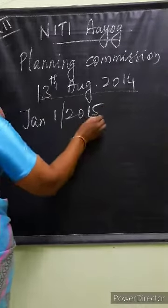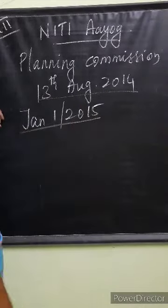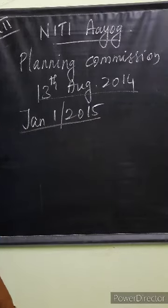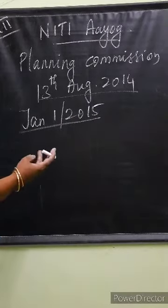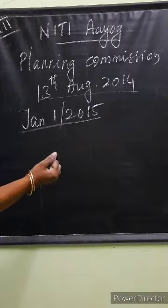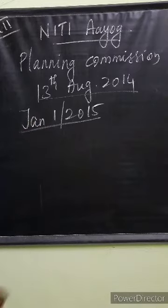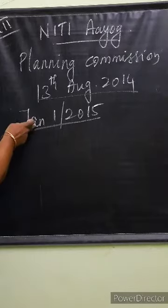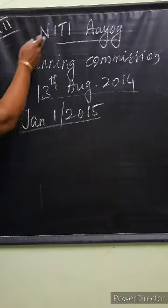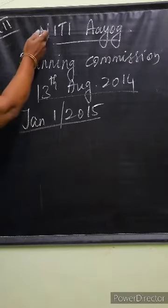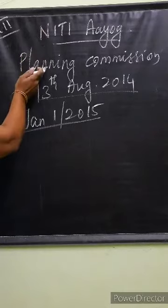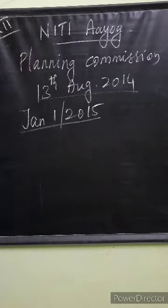It was formed earlier but came into existence in the next year. Within 5 months — August, September, October, November, December, January — within 5 months it came into existence. It was formed to replace the Planning Commission.